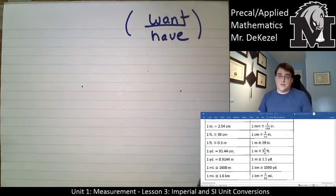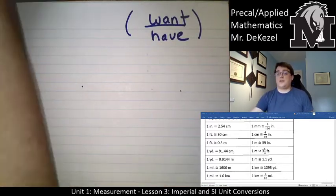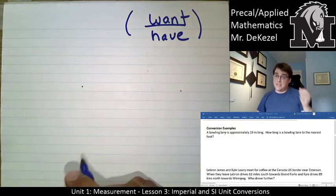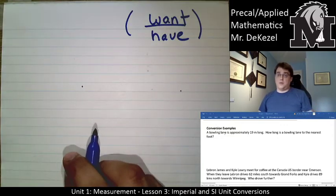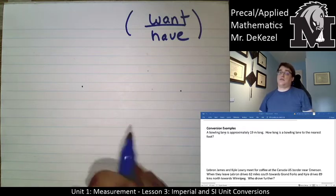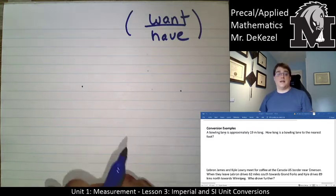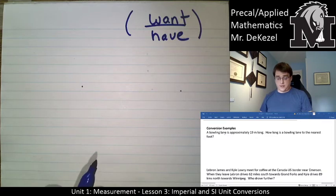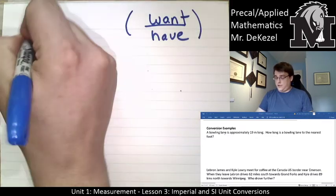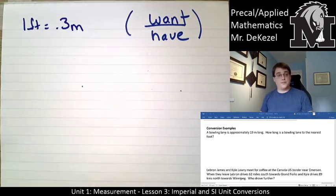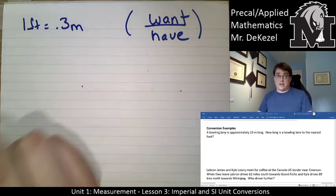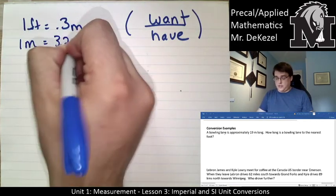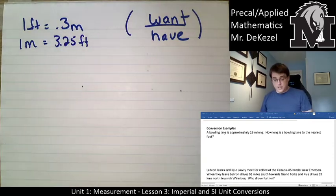Let's jump right into some conversion examples. A bowling lane is approximately 19 meters long. How long is the bowling lane to the nearest foot? Feet is an imperial unit and meters is an SI unit, so we need to convert between them. If we go back to our table, it'll tell us that one foot equals 0.3 meters. We could also use the conversion factor of one meter being 3.25 feet.